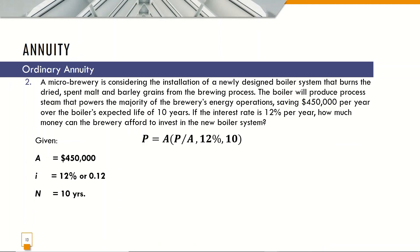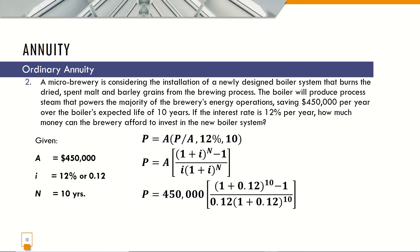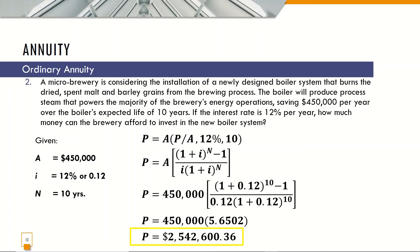Using the formula P is equal to A, P given A at 12% and 10 years: P equals $450,000 times (1 plus 0.12) raised to 10 minus 1, all over 0.12 times (1 plus 0.12) raised to 10. The quantity equals 5.65, so P is equal to $2,542,600.